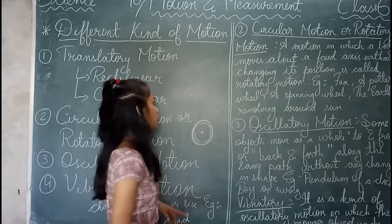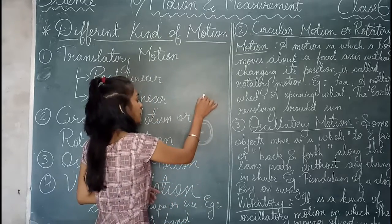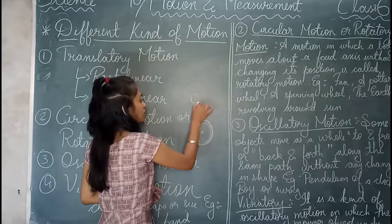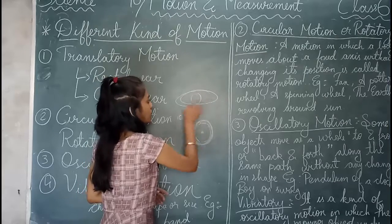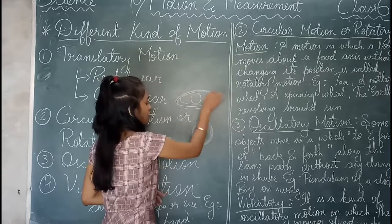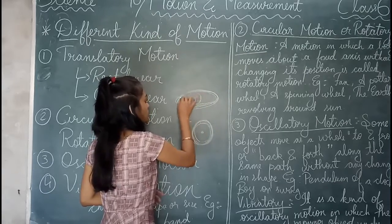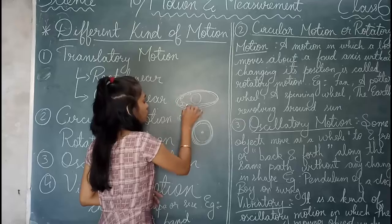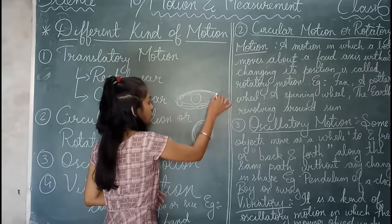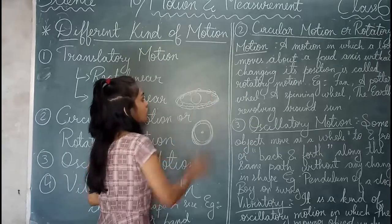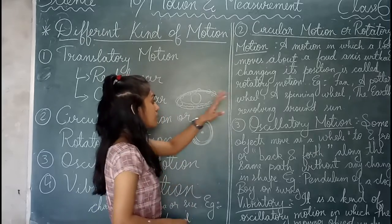The best example of rotatory motion is the Earth. The Earth rotates around the Sun and moves in a circular path. This motion is called rotatory motion.